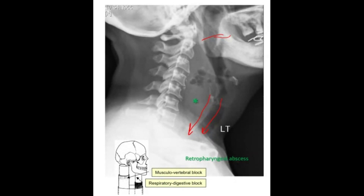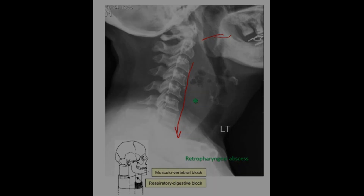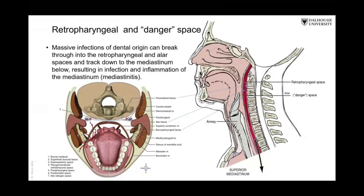The abscess is going to compress on the respiratory passage as well as the esophagus, causing difficulty in swallowing and difficulty in respiration. The most dangerous part is that this retropharyngeal space continues downwards into the mediastinum, and that's why the infection might spread into the mediastinum.